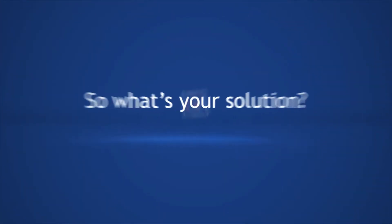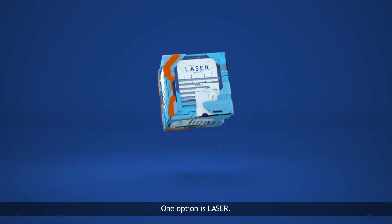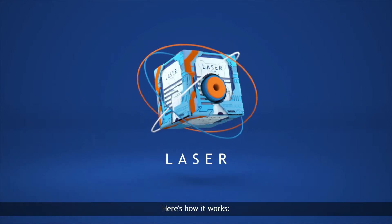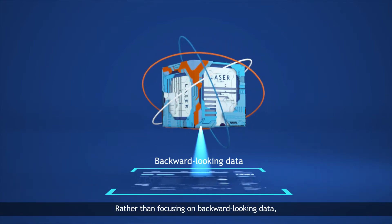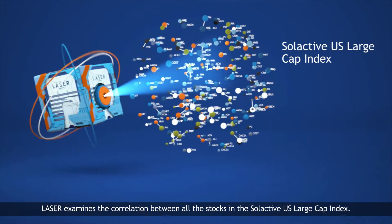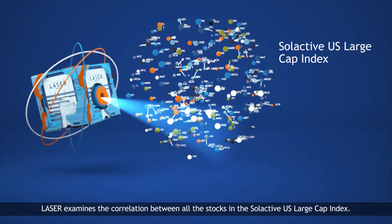So what's your solution? One option is Lazer. Here's how it works. Rather than focusing on backward-looking data, Lazer examines the correlation between all the stocks in the Selective US Large Cap Index.